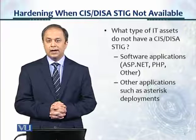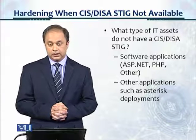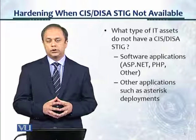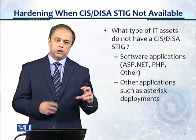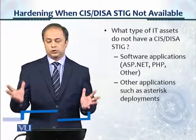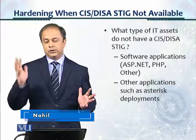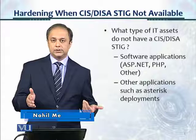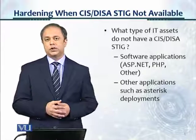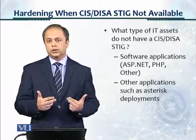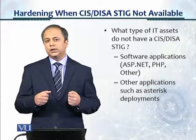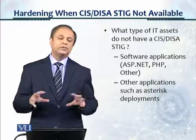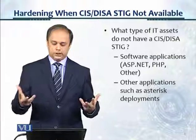What type of IT assets do not have a CIS or DISA STIG? Normally, CIS and DISA have the essential infrastructure STIGs or benchmarks. CIS is smaller; DISA is much bigger and has much broader coverage. You're likely to find the STIG in DISA, slightly less likely in CIS — but there's about a 75% chance you'll find it. There's also the case where you're using a very old version, and you would need to go to the archive section of CIS or DISA, because those archives and very old versions are sometimes maintained separately.